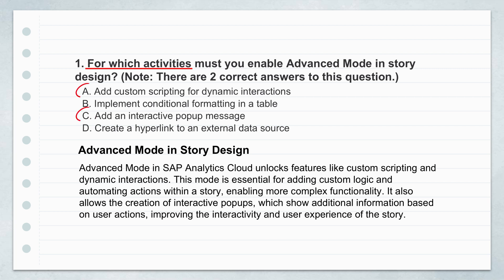This really gets at the core idea. Advanced mode is your ticket when you need to do things that go beyond the ready-made features in story design. The standard story design tools are powerful but work within certain preset limits. Scripting lets you break free from those limits and create really unique things that react to events — custom behaviors. Say you have a button: when you click it, you don't just want to filter a chart. Maybe you also want to send an email alert or trigger a specific animation to highlight a trend. That kind of complex multi-step interaction often requires actually writing code, and that's where advanced mode comes in.